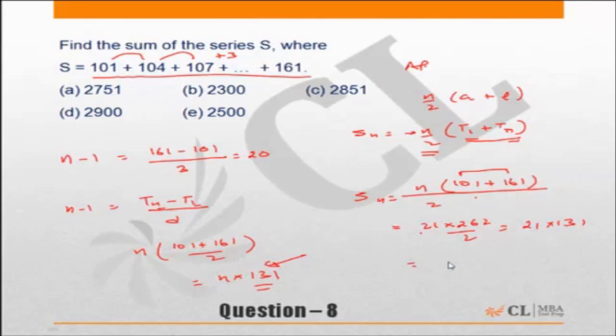You could do it that way also. Out here the answer becomes 131 into 21. Again this is 131 and 262, so that becomes 2751. Choice A is the correct answer.